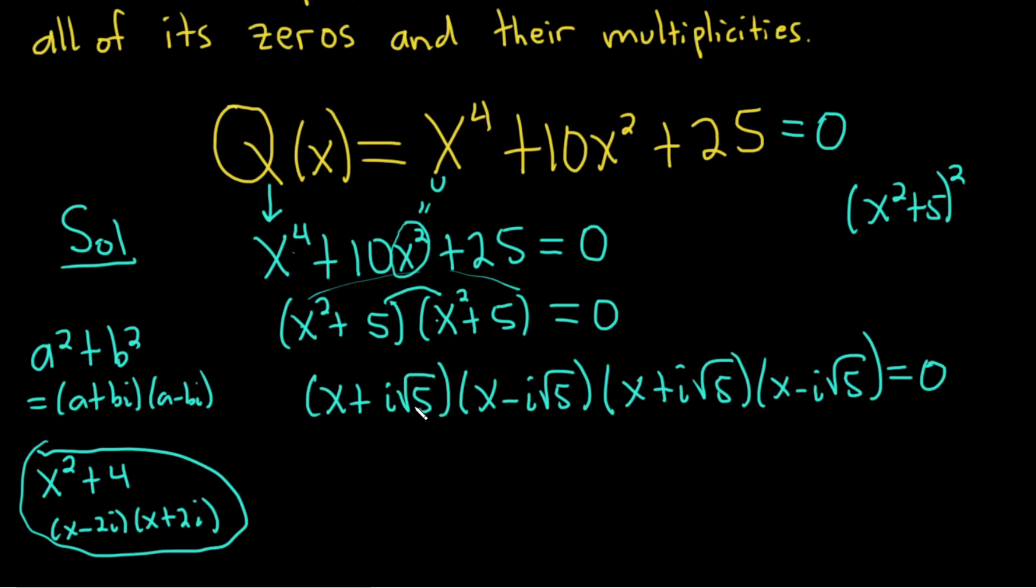And this certainly checks. If you square the x, here you get x squared. You put a plus, you square the square root of 5, you get 5. So it checks. It's equal to this.